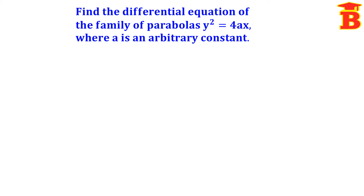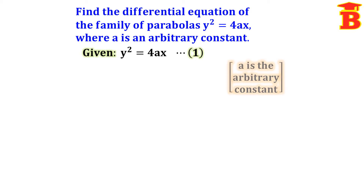Find the differential equation of the family of parabolas y squared equal to 4ax, where a is an arbitrary constant. Here given y squared equal to 4ax — take it as equation 1. Since a is the only arbitrary constant, we have to differentiate one time only.